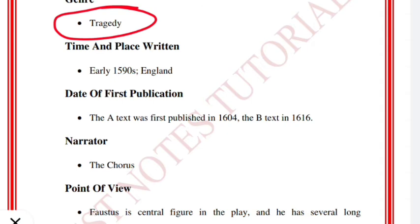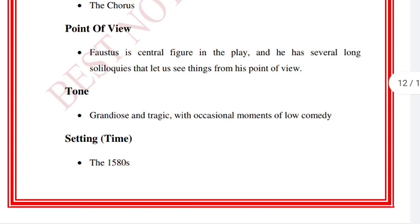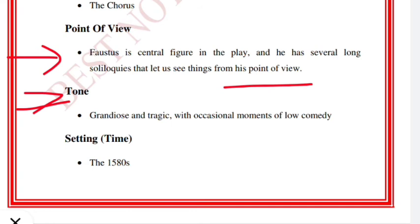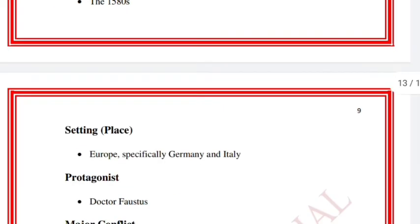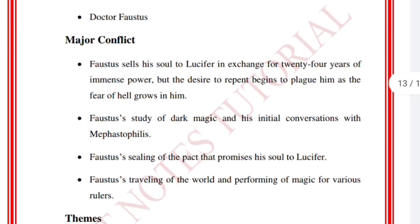Other characters include Friars, Wintner, Martino, Frederick, Benvolio, Charles the Fifth, Duke and Duchess of Vanholt. The important thing to remember is the character names. It is a tragedy written in 1590s in England. The A-text was published in 1604 and the B-text was published in 1616. The narrative mode is Chorus. Faustus is the central figure in the play and has several long soliloquies. The tone is grandiose and tragic, and the setting is in the 1580s. The protagonist is Dr. Faustus.